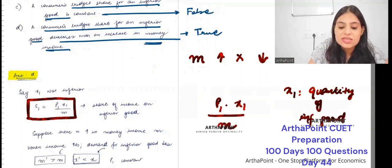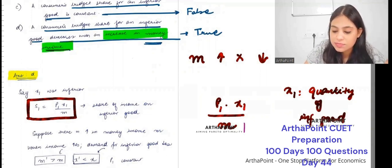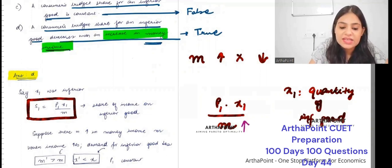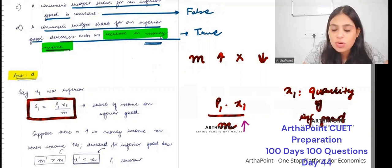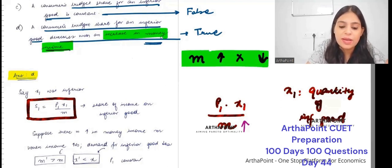Now it is saying that there is increase in the money income. So income is increasing. And then it is saying what happens to the share. But we know the rule: when income increases, demand decreases for inferior good. So when money income will increase, then X will decrease.